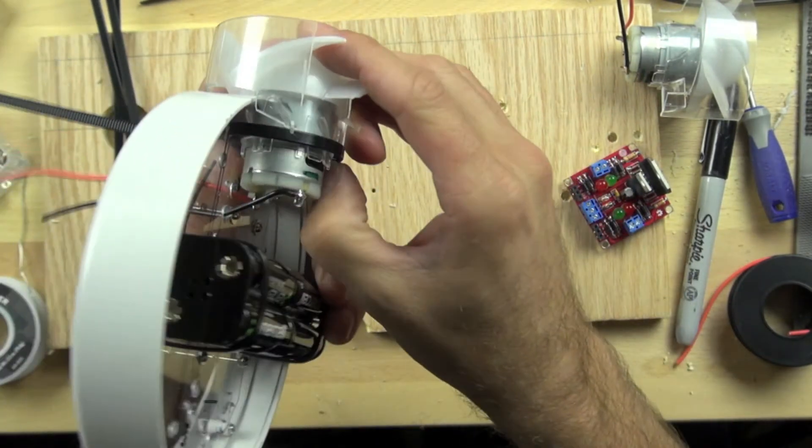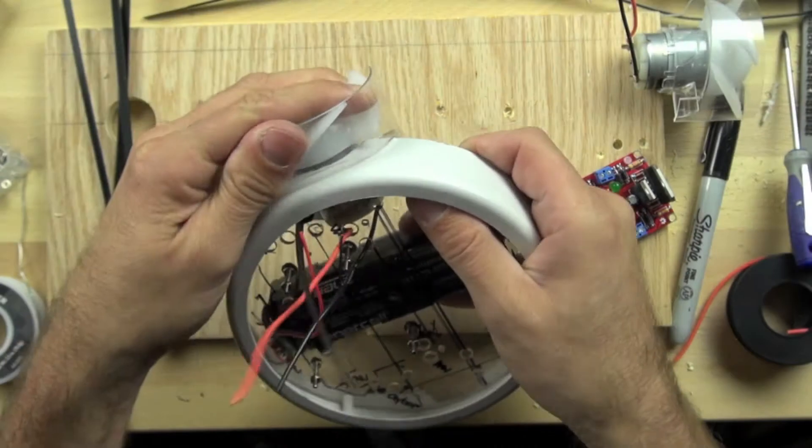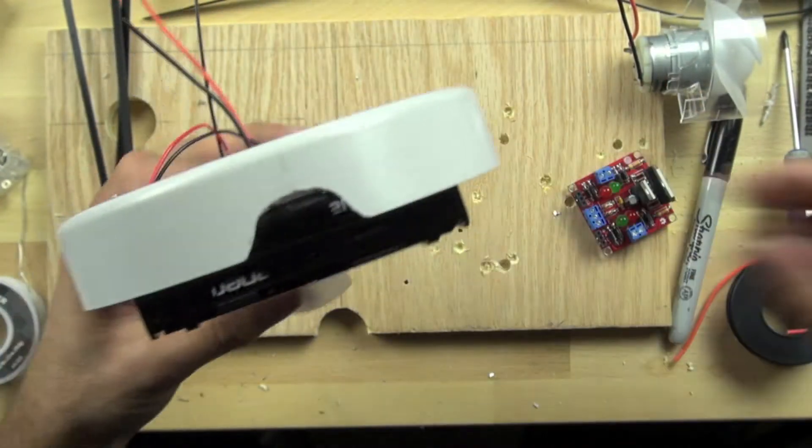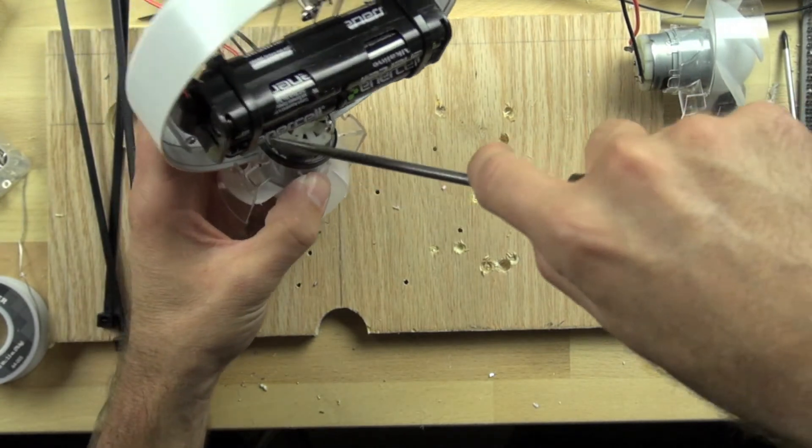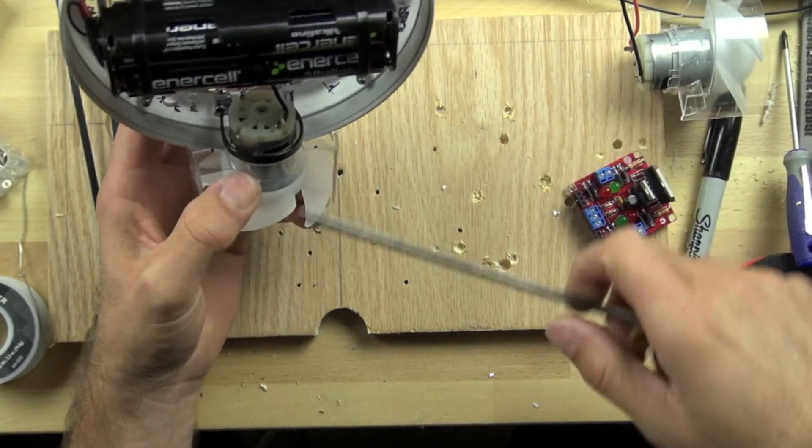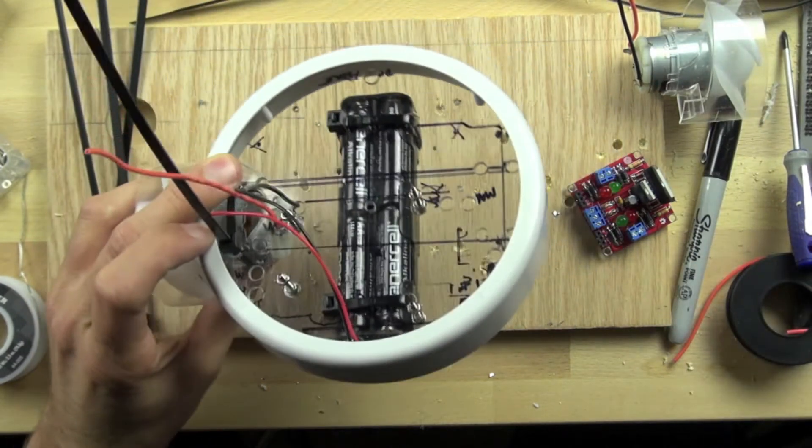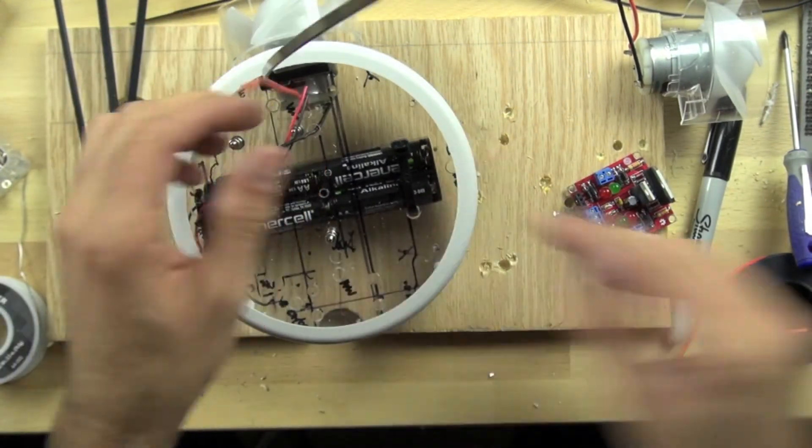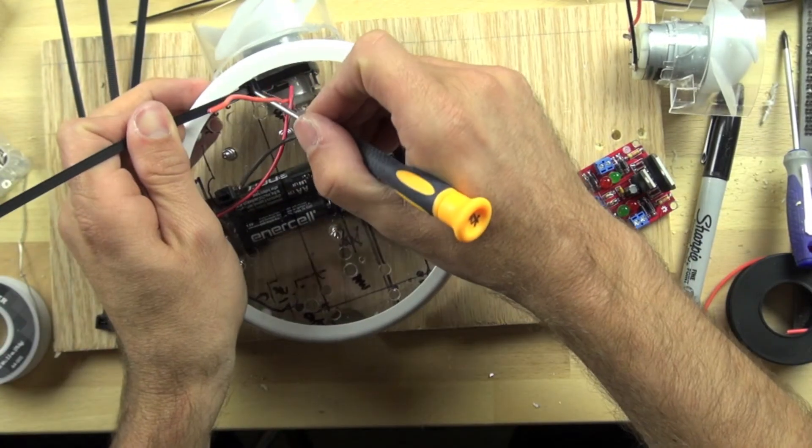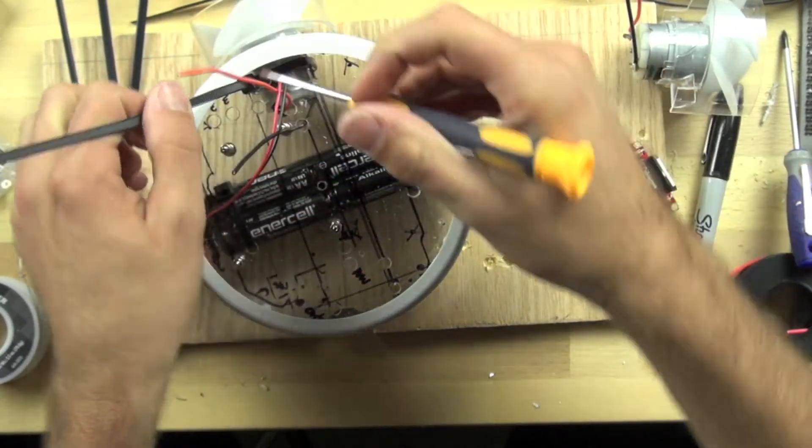We'll make sure that's lined up well. This little one doesn't want to quite work into the place that we want it to go, so we'll take the zip tie and try and pry it over. Sometimes these things can be tricky.